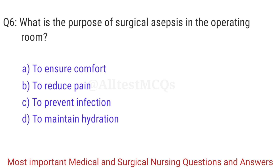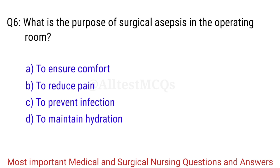Q6. What is the purpose of surgical asepsis in the operating room? The right answer is Option C: To prevent infection.